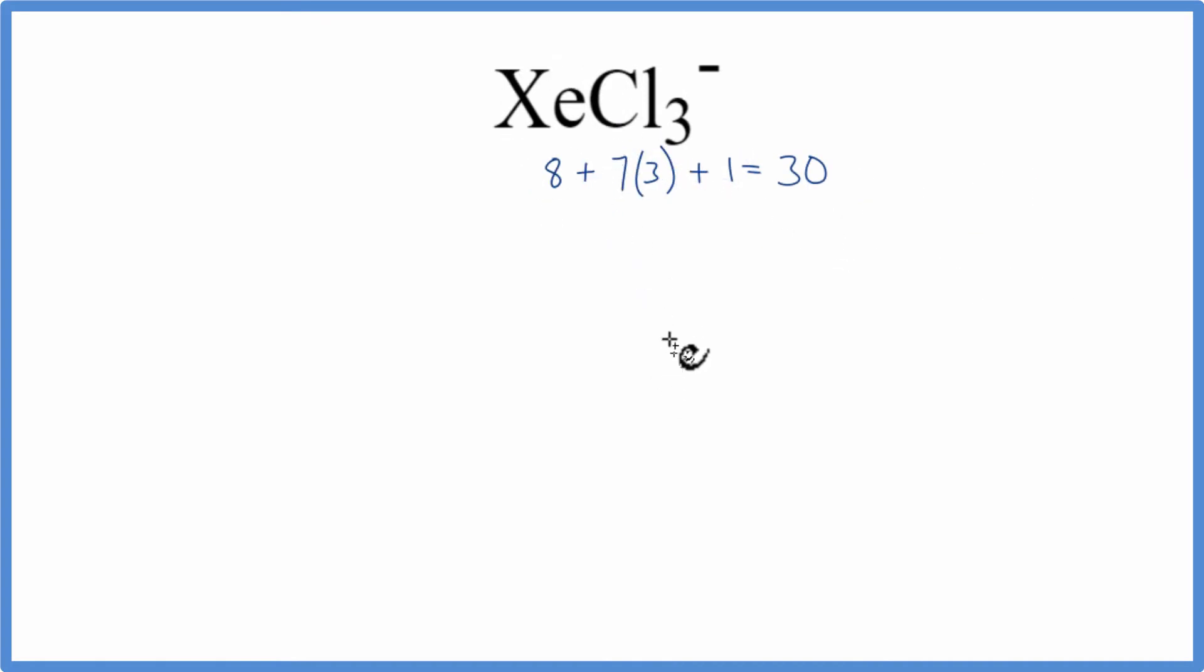We'll put xenon at the center of the Lewis structure. It's the least electronegative. And then we'll put the chlorine atoms around the xenon atom. We'll put a pair of valence electrons between the atoms. That'll form the chemical bond. And we'll have used six valence electrons. Remember we have 30.